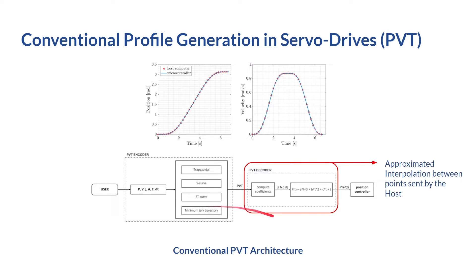Another problem is that inside the servo drive, you need to interpolate between every two points provided by the encoder. For example, the servo drive's position controlling loop works at 2,000 Hz while the host works at around 100 Hz, so between each point you must interpolate a certain number of points. All of them are approximated — not accurate or precise — computed based on an equation of order three, four, or five. At the end of the day, it's all about interpolation, which provides non-accurate points.